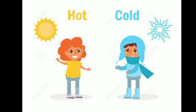Hot and cold: in our day-to-day life we come across a number of objects. Some of them are hot and some of them are cold. Tea is hot and ice is cold. Some objects are hotter than others while some are colder than others. How do we decide which object is hotter than the other? We often do it by touching the object, but our sense of touch is not always reliable.